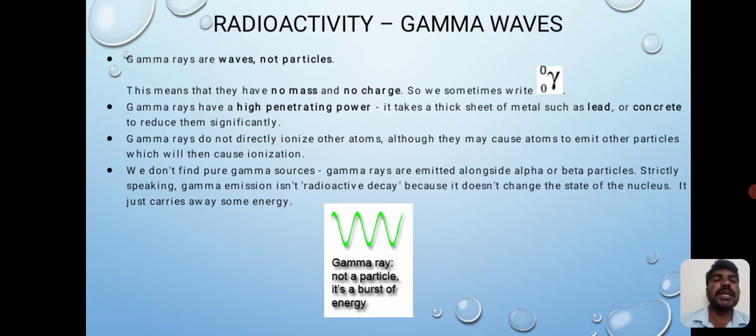Gamma rays do not directly ionize other atoms. Although they may cause atoms to emit other particles which will then cause ionization. We don't find pure gamma sources. Gamma rays are emitted alongside alpha or beta particles. Strictly speaking, gamma emission is not radioactive decay because it does not change the state of the nucleus. It just carries away some energy.